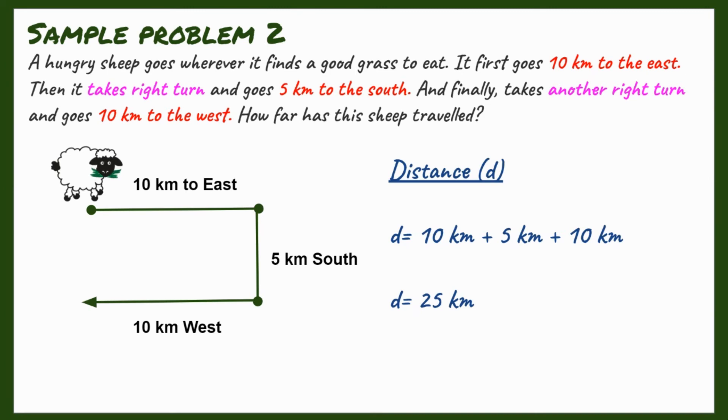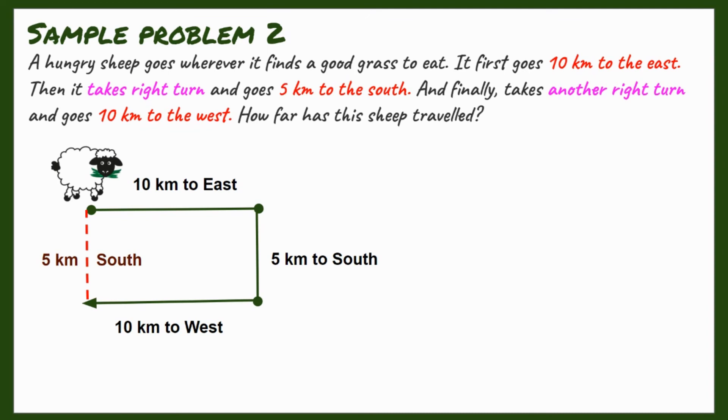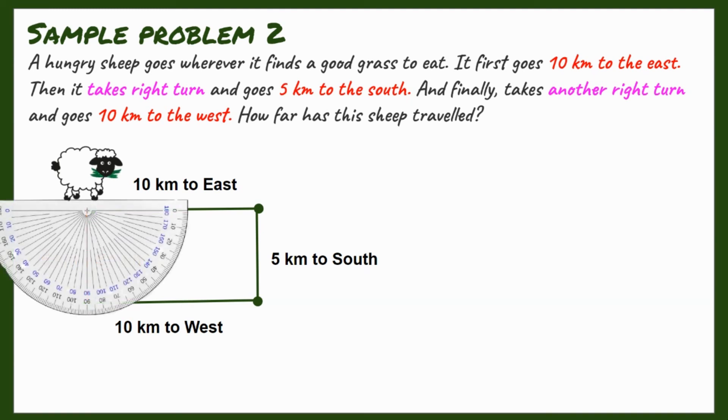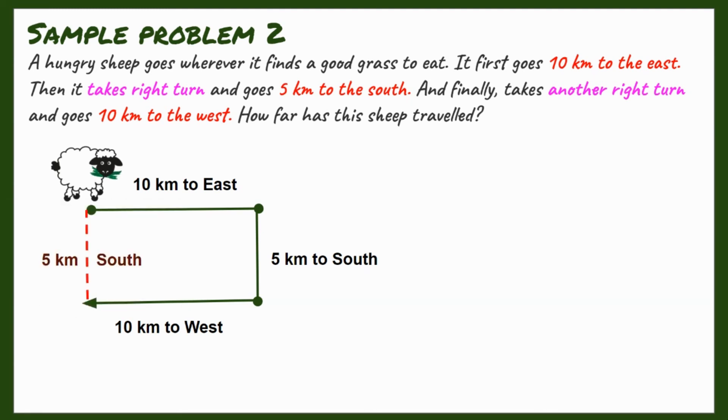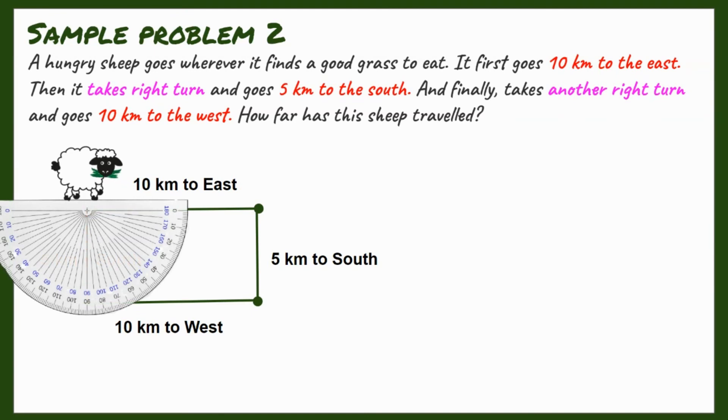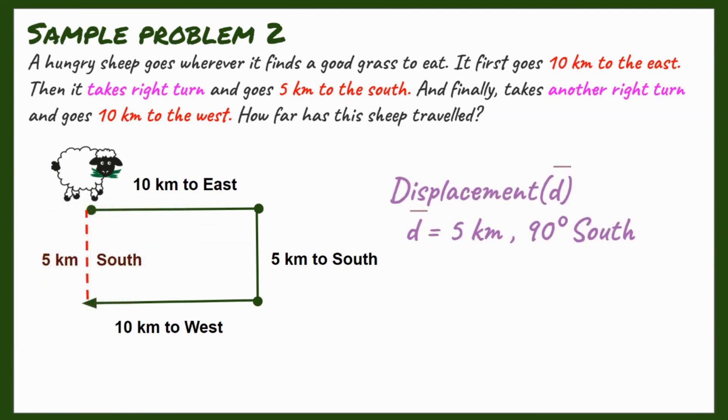Now, how about the displacement? Take a look at the illustration. You will see that the shortest distance between starting point and end point would have been 5 kilometers to the south. It doesn't matter what it did along the way, what its path was. At the end of the day, it ended up 5 kilometers south. And this notion is known as the displacement. Using a protractor, the angle is 90 degrees south. So, your displacement is 5 kilometers, 90 degrees south.